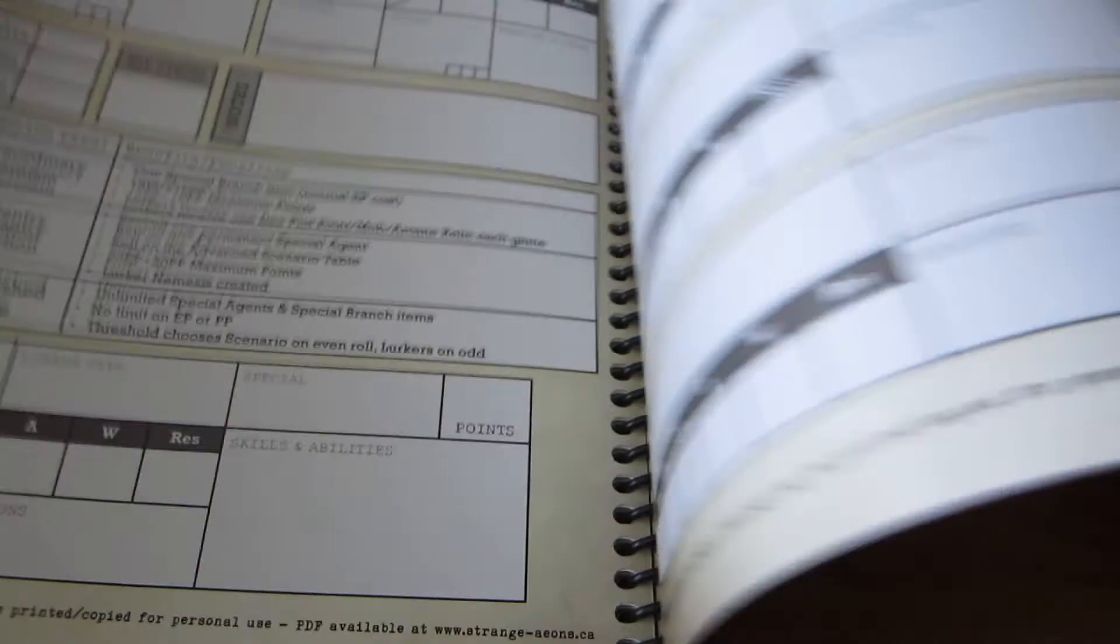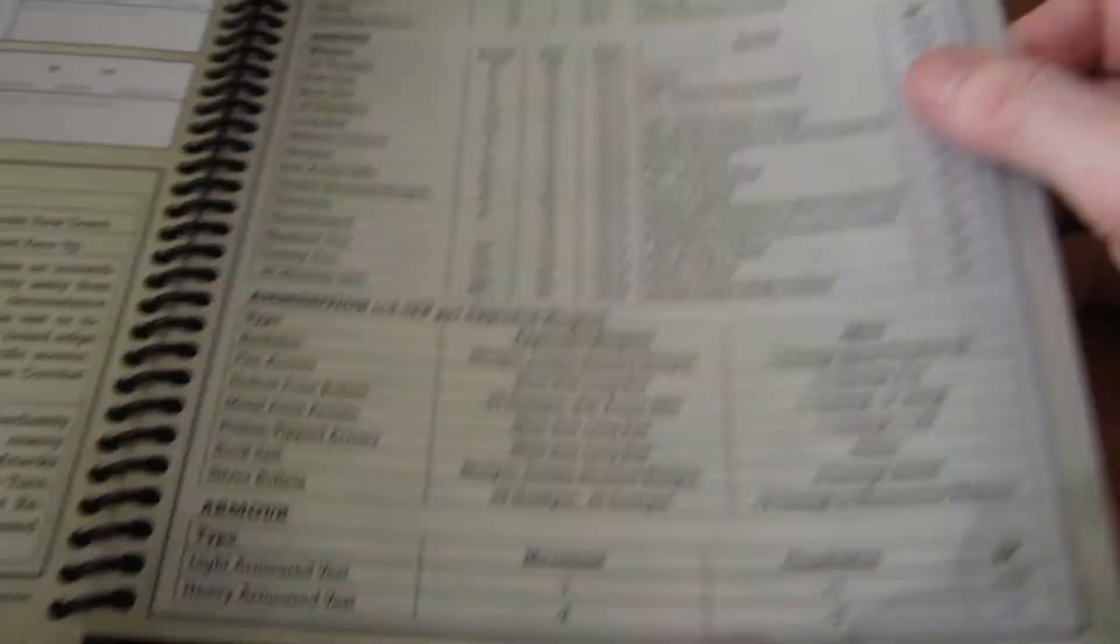And well, at the end you have some templates you can copy and cut out if you like. A log sheet for your models you can copy. And some reference table, which the back cover is laminated, so that's useful for reference.